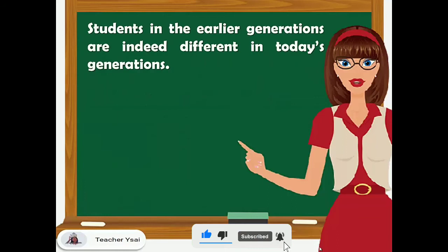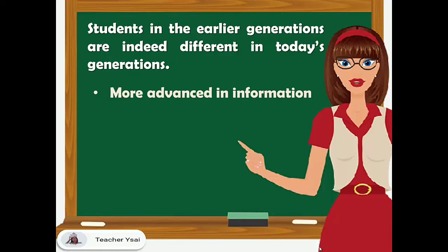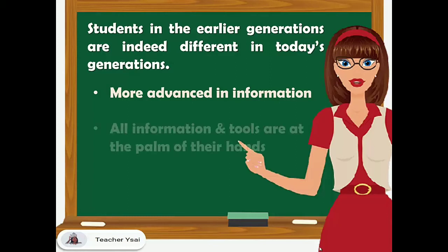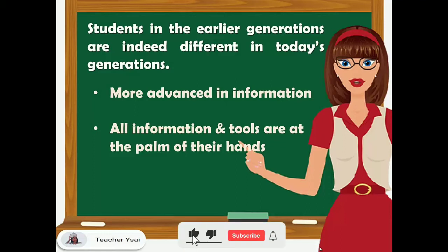Students in the earlier generations are indeed different from today's generation. Having technologies at their side makes them more advanced in information, where they do not need to have a long-distance walk just to access information from the books in the library. Almost all information and tools that they need are already at the palm of their hands. They only need to access and use these technologies rightfully and appropriately.